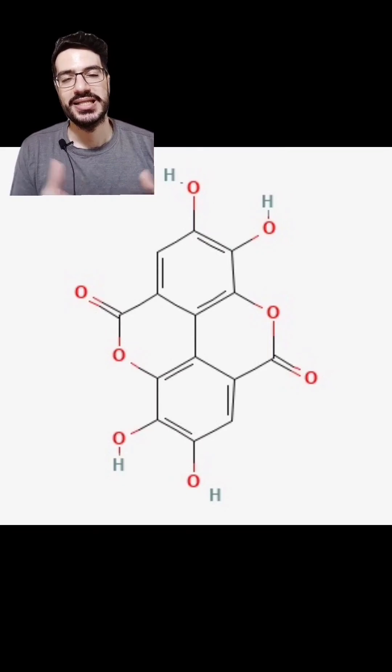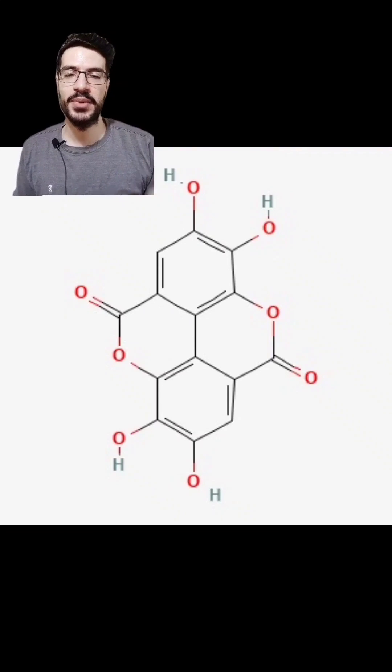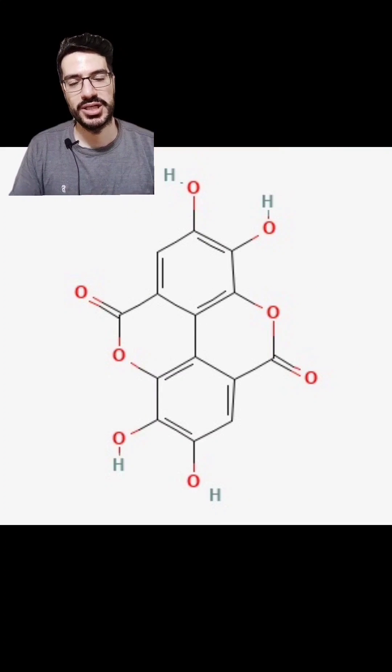And this ellagic acid is able to take away this copper from the enzyme, rendering the enzyme useless and stopping the melanogenesis process.